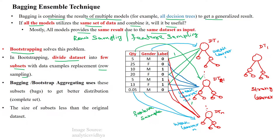So here the output for sample 1 is collected from model 1 and also from model N. We have N number of models, and the output of sample 1 from all N models is sent to the strong learner.